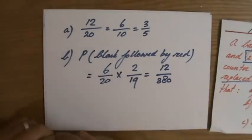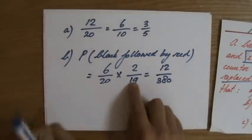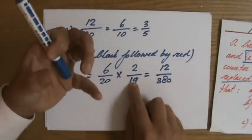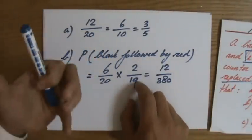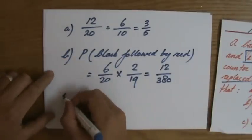And again, you can simplify it if you want, but with probability, you don't have to. But it's important now, because you do not replace that counter. It is 2 out of 19 for the chance of getting a red one.